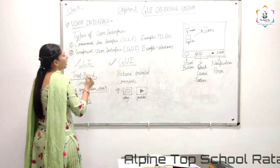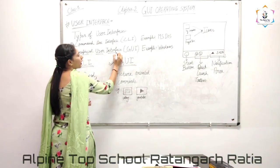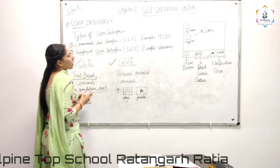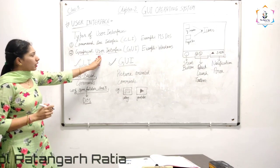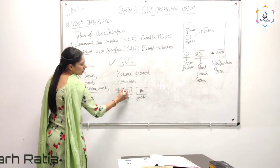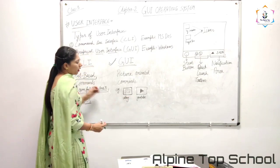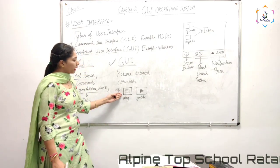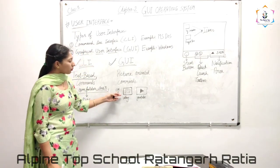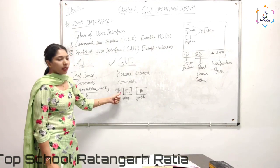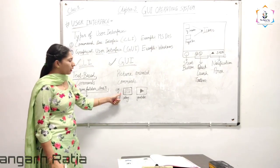Next is GUI. What is GUI? It is Graphical User Interface. Graphical user interface is a picture-oriented interface in which you click on a picture to perform a function — the function you want to do is done with the help of a single click.